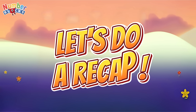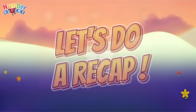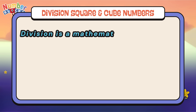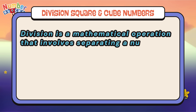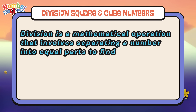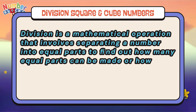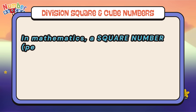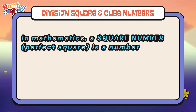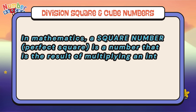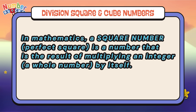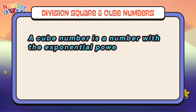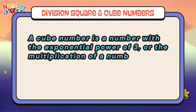Now join me and let's do a recap. Division, square and cube numbers. Division is a mathematical operation that involves separating a number into equal parts to find out how many equal parts can be made or how many will be in each part. In mathematics, a square number or perfect square is a number that is the result of multiplying an integer by itself. And a cube number is a number with the exponential power of 3, or the multiplication of a number by the same number three times.